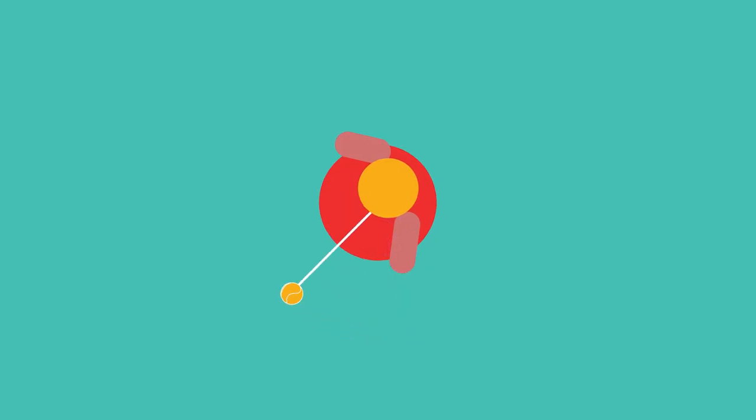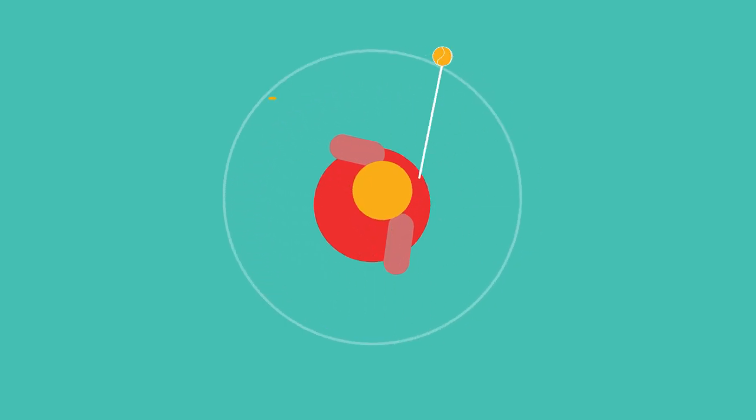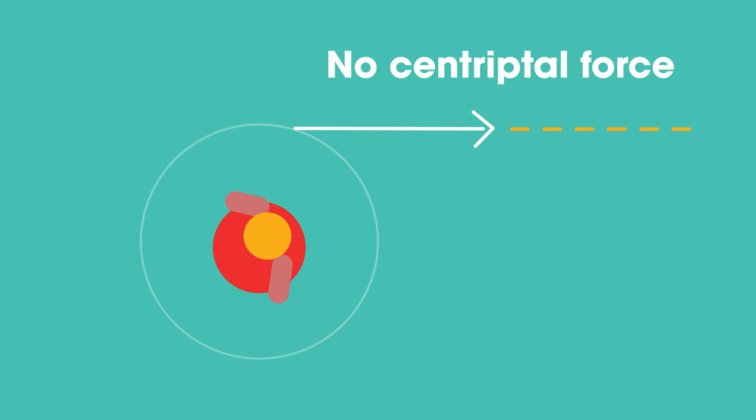Try swinging a ball attached to a string around your head. The string pulls the ball into the circular orbit. However, if you let go of the string, no more centripetal force, the ball just continues in a straight line.